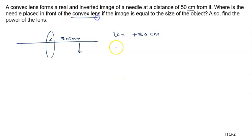Where is the needle placed in front of the convex lens? U we have to calculate. If the image is equal to the size of the object, height of the image equals height of the object, it is given to us.